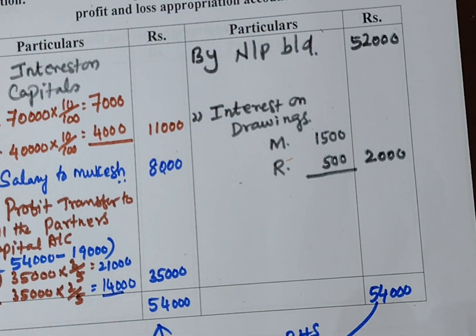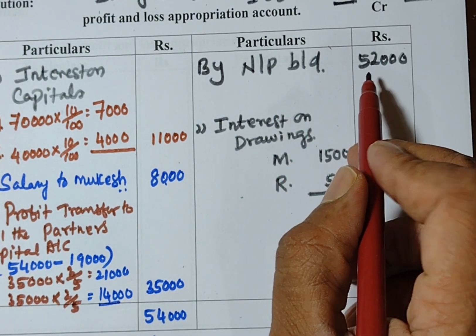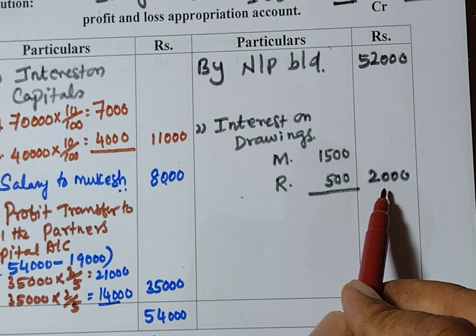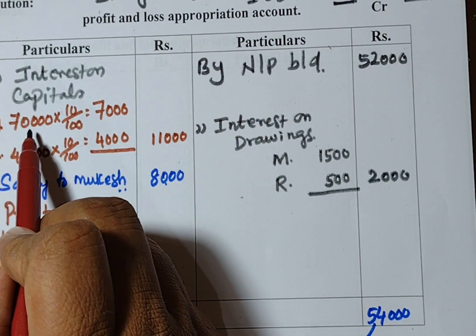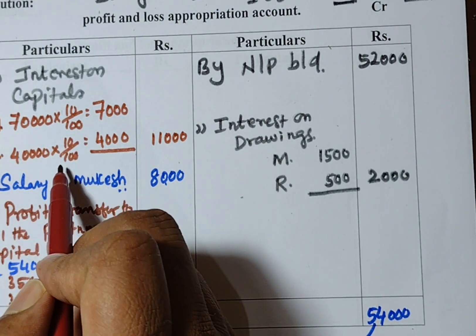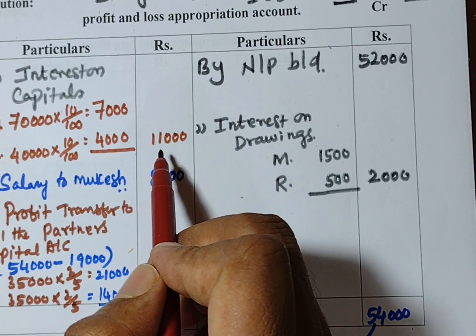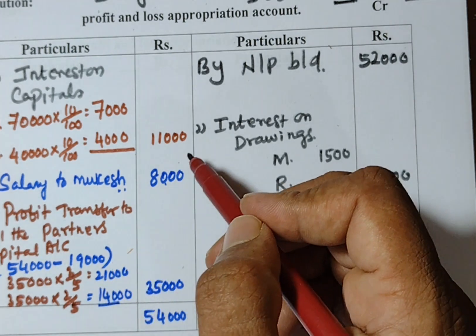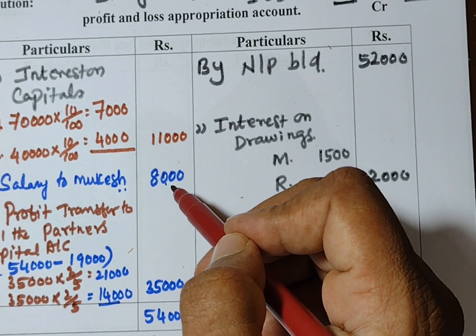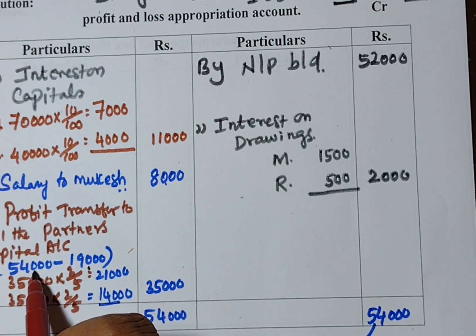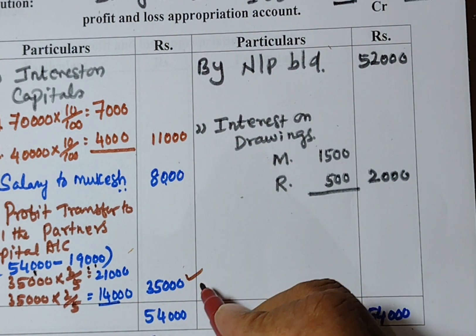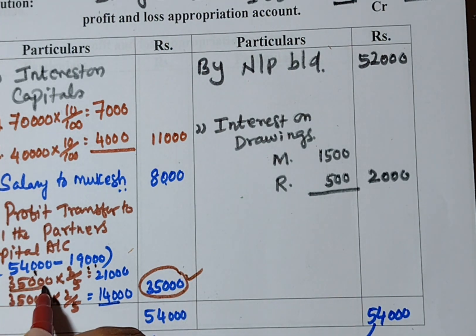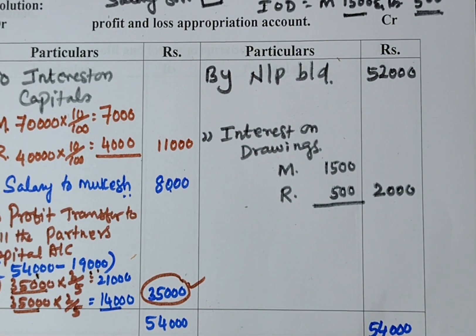To recap: net profit is rupees 52,000, interest on drawings totals rupees 2,000, giving credit side total of rupees 54,000. Interest on capital is rupees 11,000 and salary is rupees 8,000, totalling rupees 19,000 on the debit side. 54,000 minus 19,000 gives a profit of rupees 35,000, distributed among the partners. For any queries, please comment below. Please subscribe to the channel for further notifications. Thanks for watching.